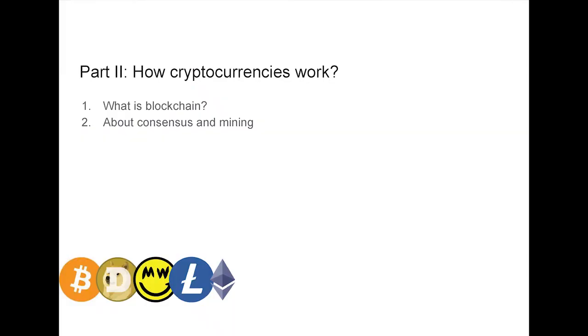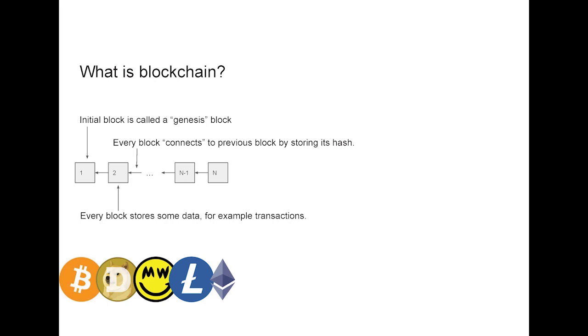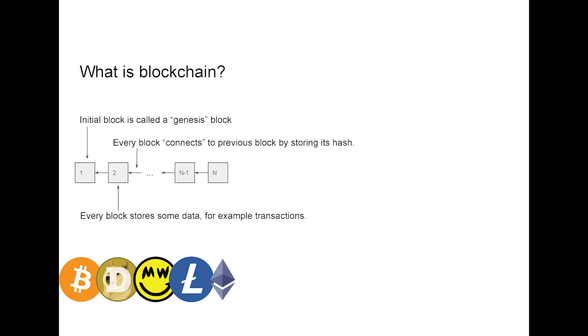First, let's talk about cryptocurrencies a bit, explain what is blockchain, what is consensus, what is mining, and all those things. So blockchain is a chain of blocks. Every block can store some data. It could be transactions, could be some medical records, could be anything. And the important information is that every consecutive block stores a hash of the previous block. So it makes it immutable. It makes it really impossible to put a block somewhere in the middle because that would invalidate all the future blocks.